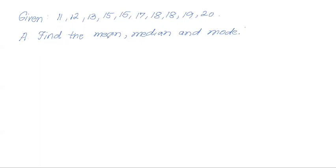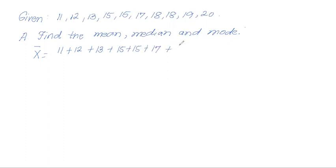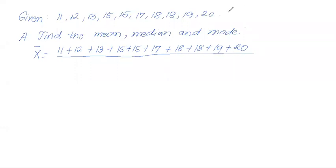What is the mean of 11, 12, 13, 15, 15, 17, 18, 18, 19, and 20? To find that, we just add all the observations, then divide the sum by the number of observations. Here we have 10 observations.